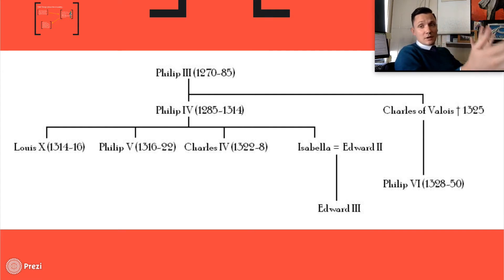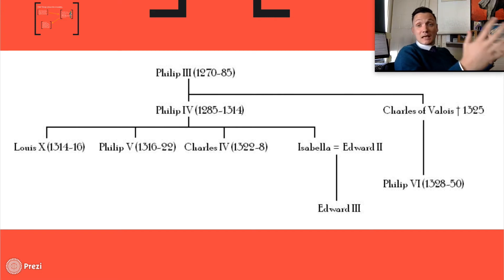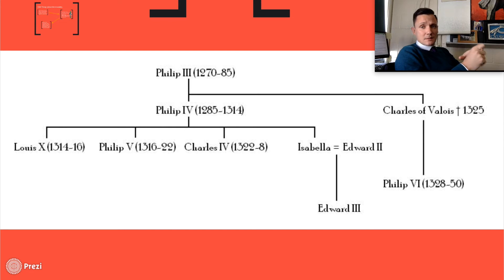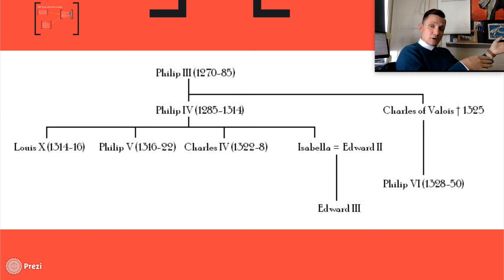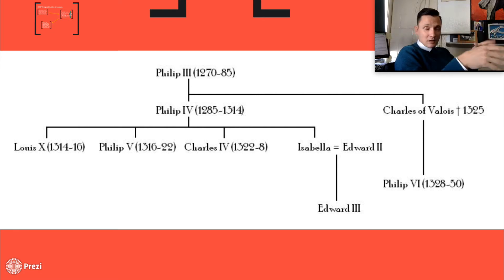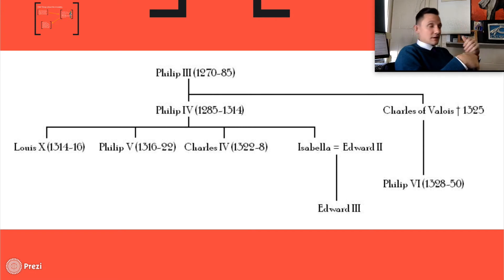Moving into the High Middle Ages, we get the establishment of the first kingdoms. One of the big kingdoms was England, established in 1066 — the Battle of Hastings, William the Conqueror, William of Normandy, who writes the Domesday Book, beats Harold Godwinson, and moves the country forward. Then 1215, Magna Carta is signed by King John, and the launching of the Crusades.